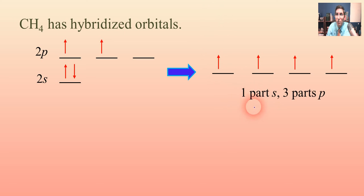It's one part S and three parts P, and so as a result we call that SP3 hybridization. We don't put the one on there, we just assume it's there. I guess you could call it S1P3, but we just call it SP3 hybridization because it's one part S, three parts P.